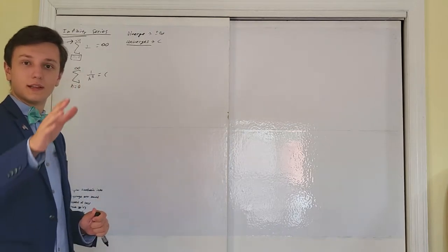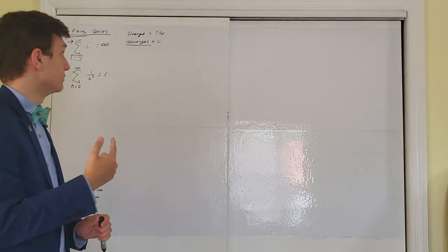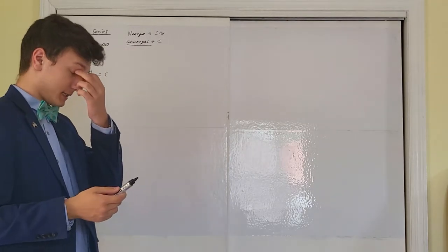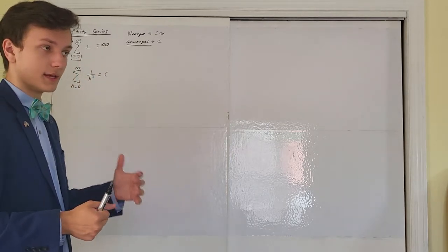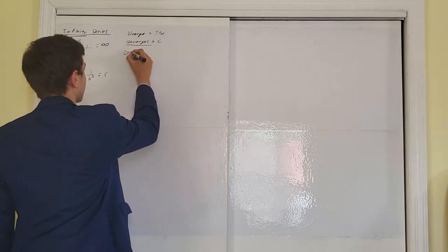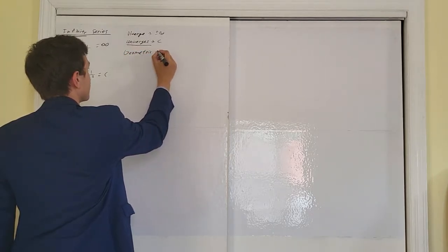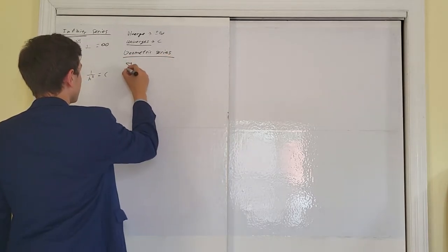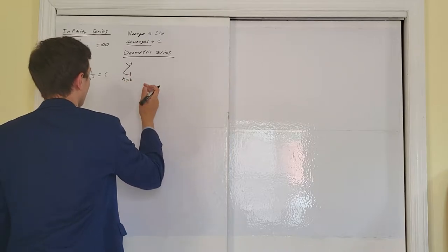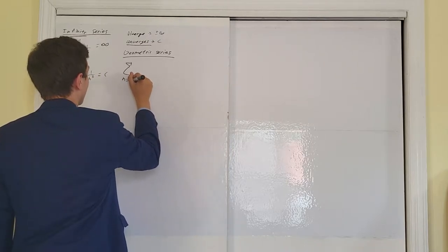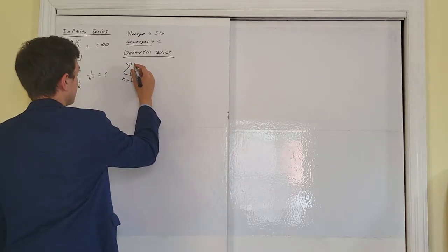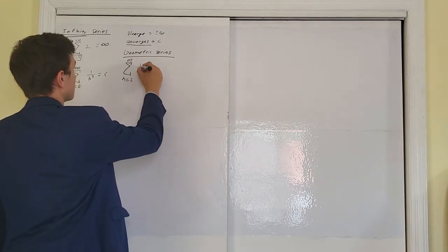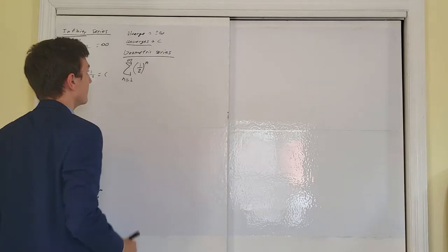There will be some series that we'll be able to find an actual value to which they converge. So why don't we take a look at one type of series that we're going to be able to find the number it converges to — that's called the geometric series. A geometric series is the infinite sum from n equals 0 — or n equals 1, or some finite number — to infinity. A geometric series has the general form: some constant number to the n.